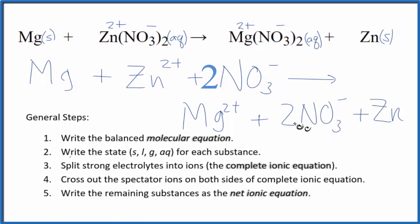So this is the complete or total ionic equation. Now we can cross out spectator ions. They're on both sides of the complete ionic equation. In essence, they haven't changed, so we're not really interested in them.